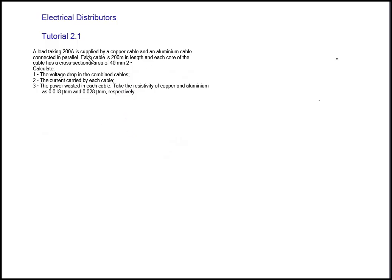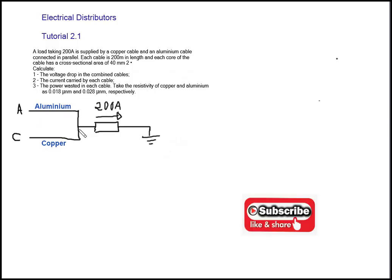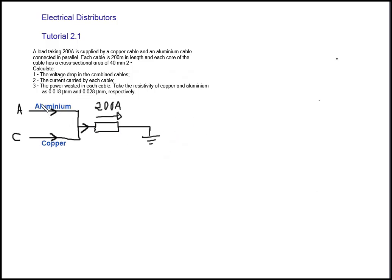Before you do anything, try to draw the circuit according to the problem statement — drawing the circuit makes things clear. We have two cables connected in parallel: aluminum and copper, joined together to supply a load taking 200 amps. We know 200 amps flows in total, but we don't know the current flowing in each individual cable. We need to get the resistance of each cable to calculate the current for each part of the circuit.